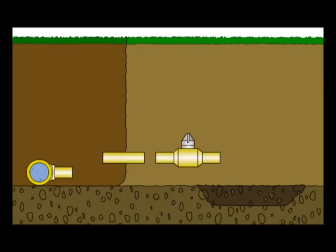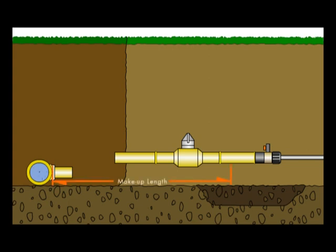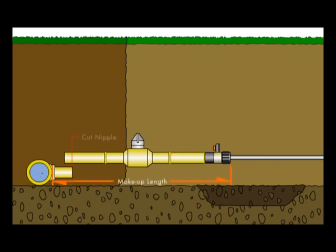A small piece of pipe called the nipple is fused to the valve and the hot tap tool is fused to the other end of the valve. The overall length of the tool is measured and the nipple is trimmed to the proper makeup length. The hot tap assembly is fused to the saddle fitting.